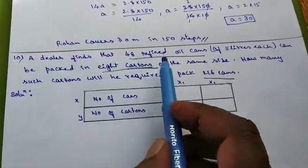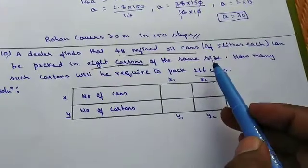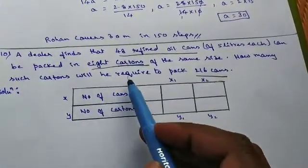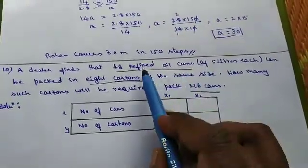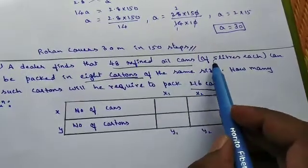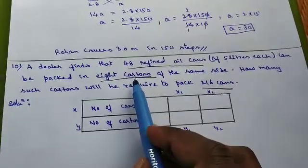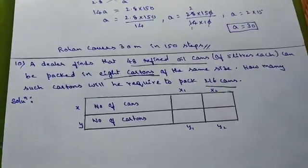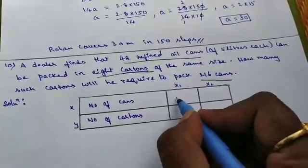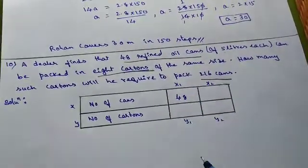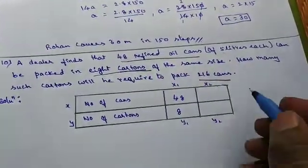A dealer finds that 48 refined oil cans can be packed in 8 cartons of the same size. How many such cartons will he require to pack 216 cans. So keep remember children. The capacity of one oil can is 5 liters. Here cartons are nothing but small boxes in which the oil cans can be fitted. So here 48 oil cans. Two quantities are number of cans and number of cartons. So 48 oil cans can be packed in 8 cartons.